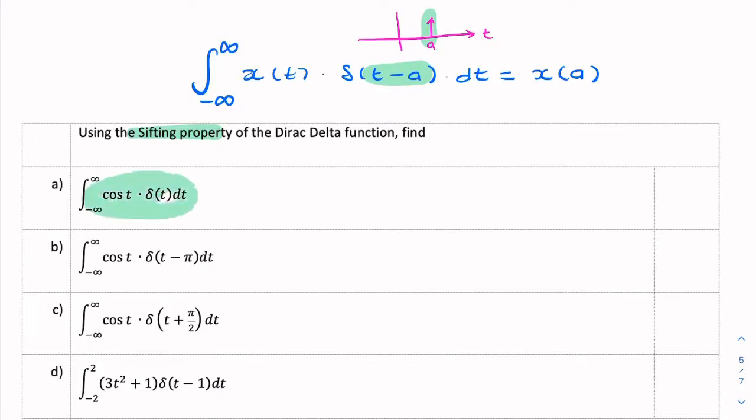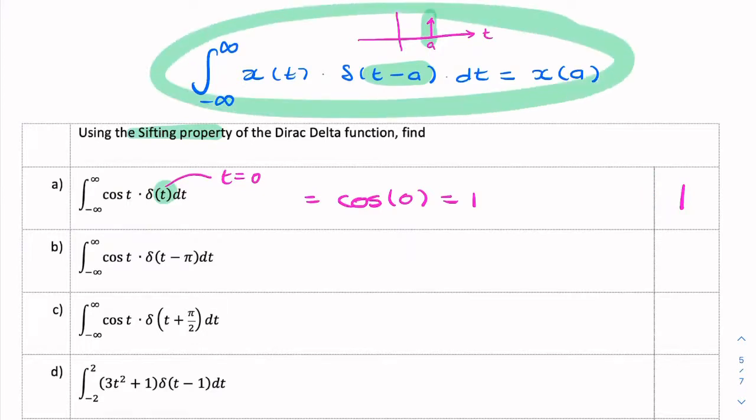If we look at the first integration, we have a product of an impulse function times cosine of t, so cosine of t is my x of t. The argument equals zero, so the answer will be x of zero. And x in this case will be cosine, so it's cosine of zero, which is one. So we simplified the integration, we ended up with a single value by using this sifting property.